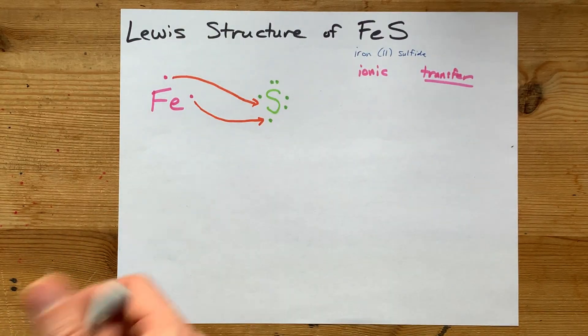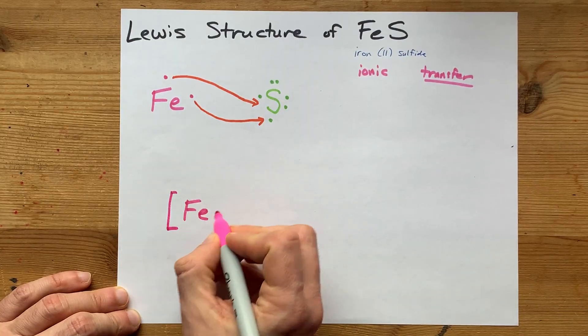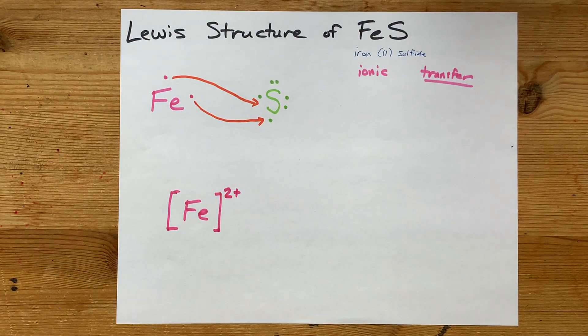So, the final Lewis structure actually shows the Fe with no valence electrons around it. And because it lost two electrons, it has a two plus or plus two charge.